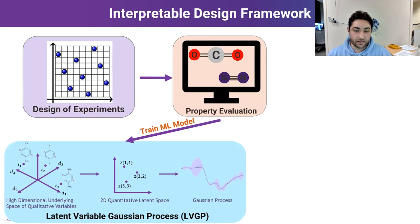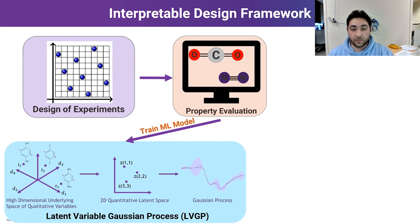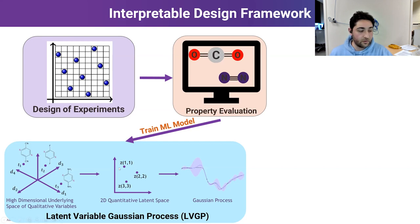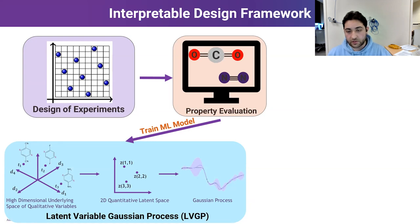The Latent Variable Gaussian Process, also known as LVGP, enables us to incorporate qualitative design variables into design by converting them into quantitative or numerical variables. Every qualitative variable should have some underlying numerical meaning, possibly high-dimensional. By using proper dimension reduction techniques, we can reduce this high-dimensional numerical space into 2D latent spaces and obtain latent variables, then fit a regular Gaussian process model useful for Bayesian optimization.